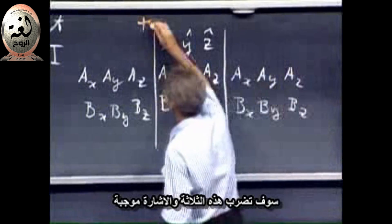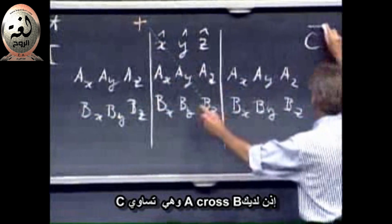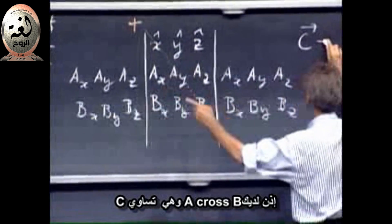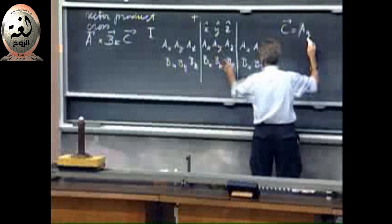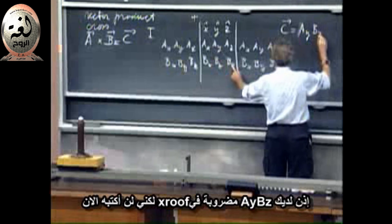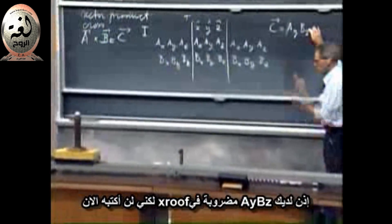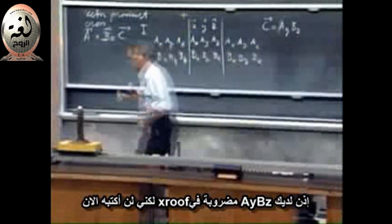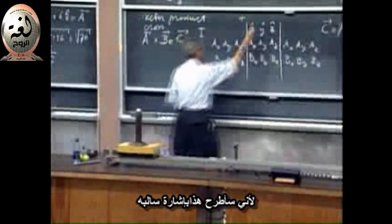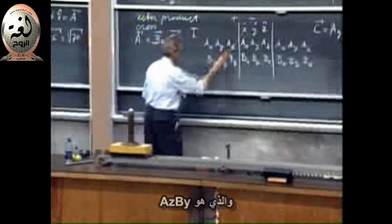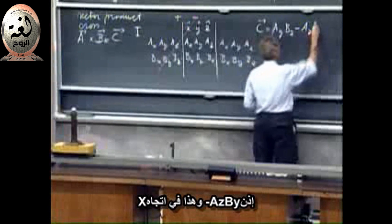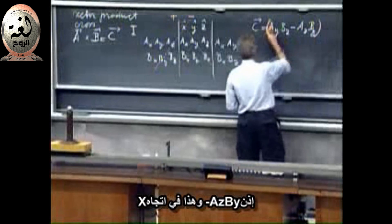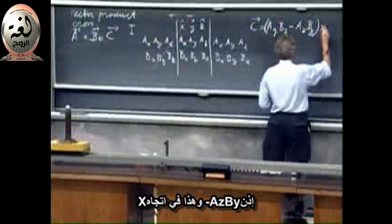And that's a plus sign. So you get A-Y, so C, which is the cross... A cross B, equals A-Y times B-Z times the X roof. But I'm not going to put the X roof in yet, because I have to subtract this one, minus sign, which has A-Z-B-Y. So it is minus A-Z-B-Y, and that is in the direction X.